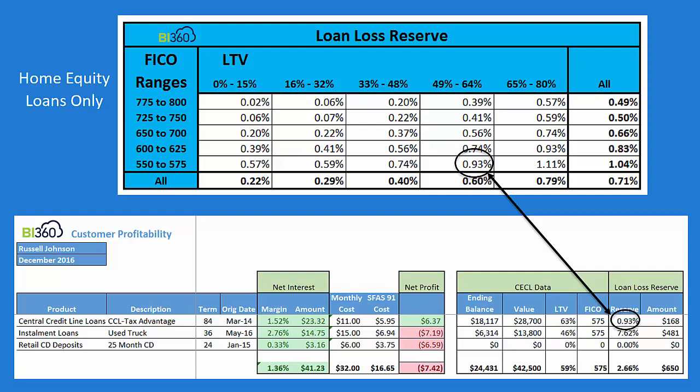So I have a loan to value of 63%. So that's going to fall in my fourth column. If you look up above at my loan loss reserve, it's going to be in the fourth column. And then the last time they applied for credit at the bank, they had a FICO score of 574. So I just simply attach that FICO score to Russell Johnson here. So every loan has the same FICO score. This household has that same FICO score. So that shows up on my last row. And so the intersect is 93 basis points, a little bit less than 1%. So I'm going to apply that 93 basis points against that home equity loan of 18,000. And I set up a reserve of $168 for that specific loan.